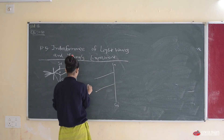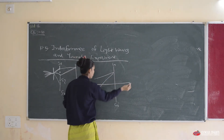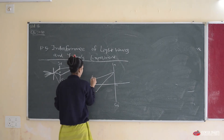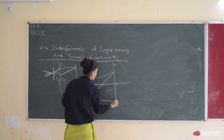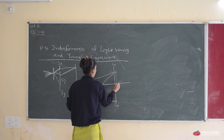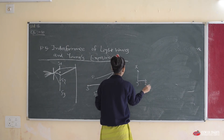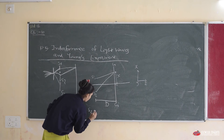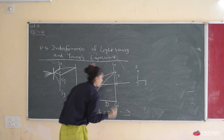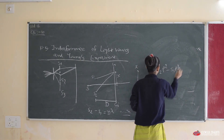The two rays meet at one point. We draw a center line and name the intersecting point. The distance from the sources to the screen is capital D. The distance from the intersecting point to the center point is x. The distance between source S1 and source S2 is small d, so each is at d/2 from the center. We need to find S2 minus S1, which equals n × λ, where n can be 0 to n.